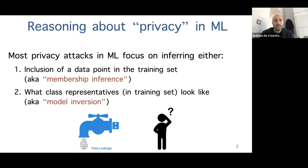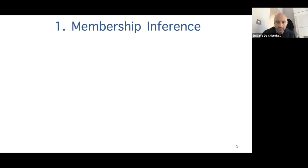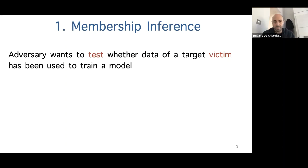The second line of work is inferring what class representatives in the training set look like. These are called model inversion attacks — you have access to a trained model and try to invert it, reconstructing what records were used to train it.